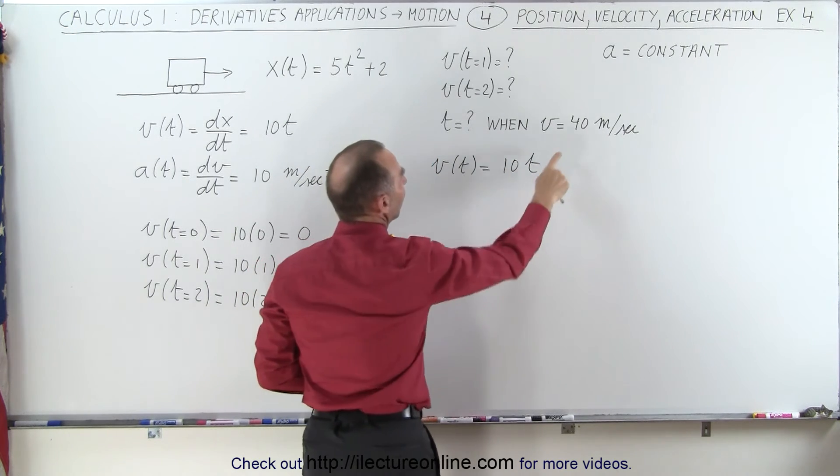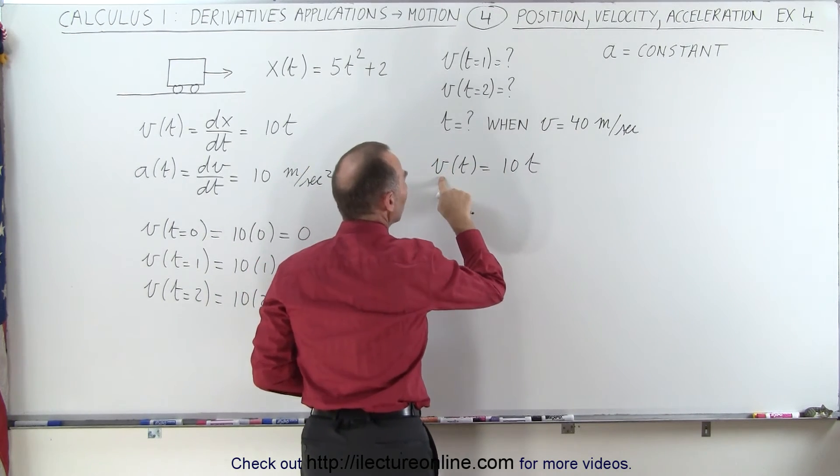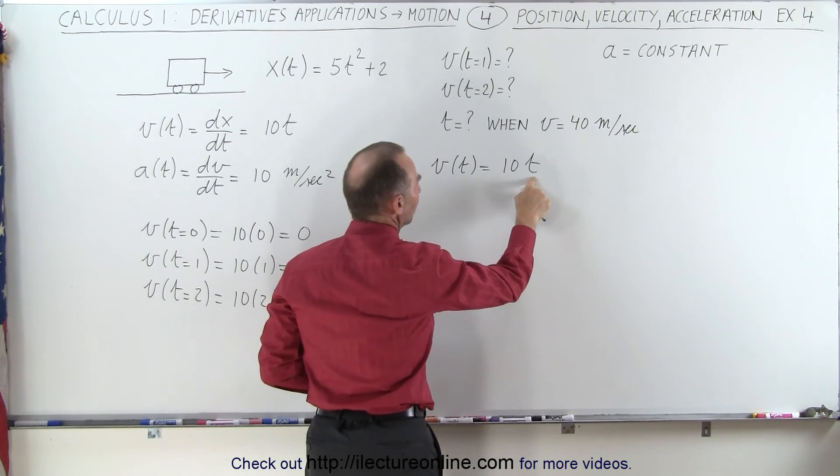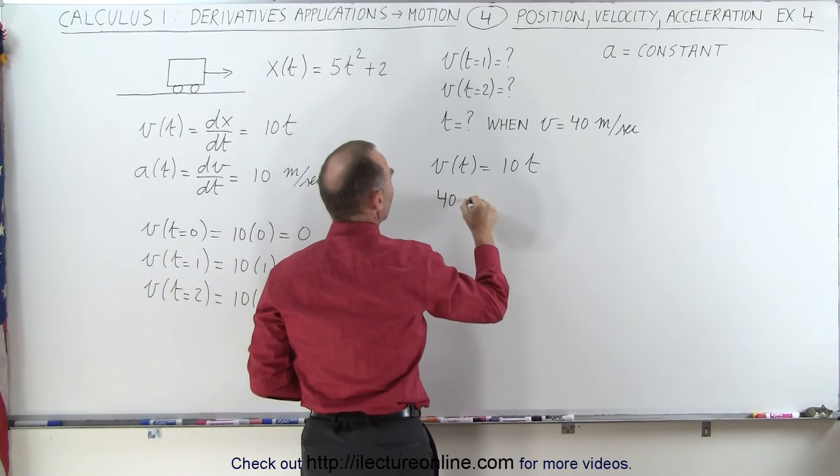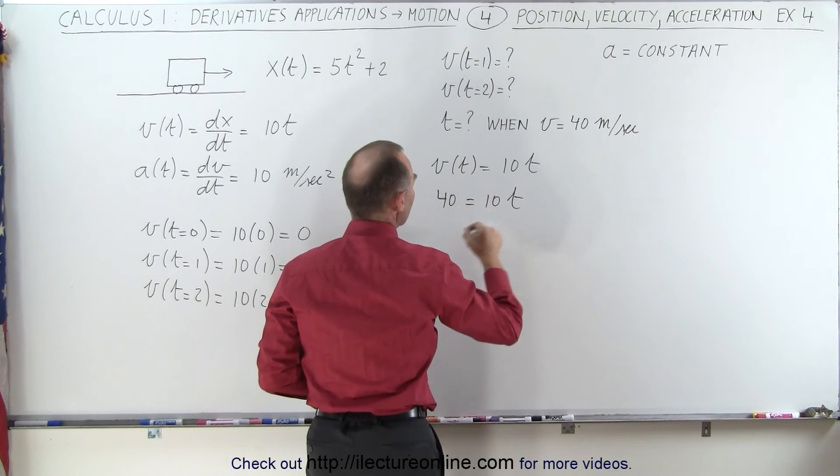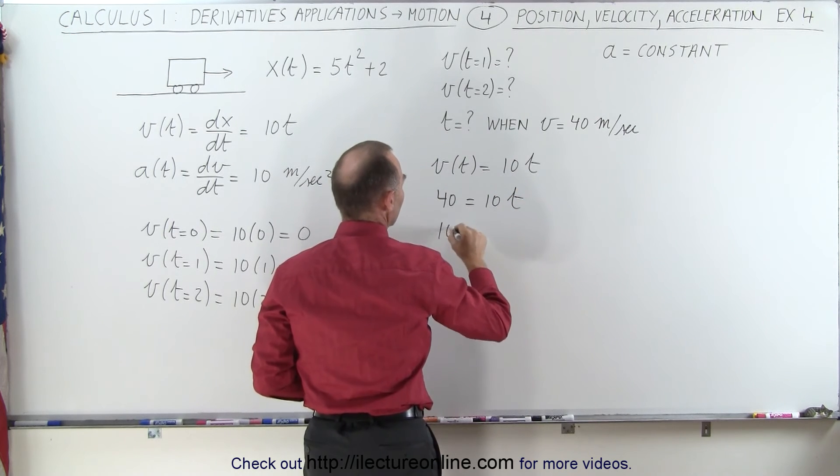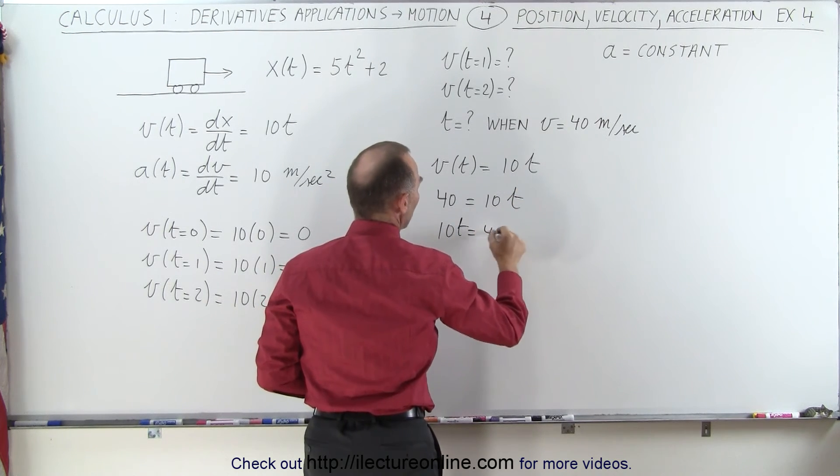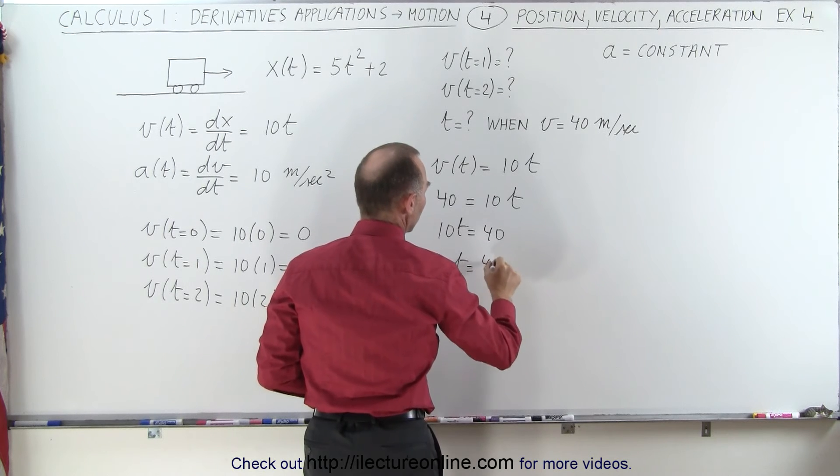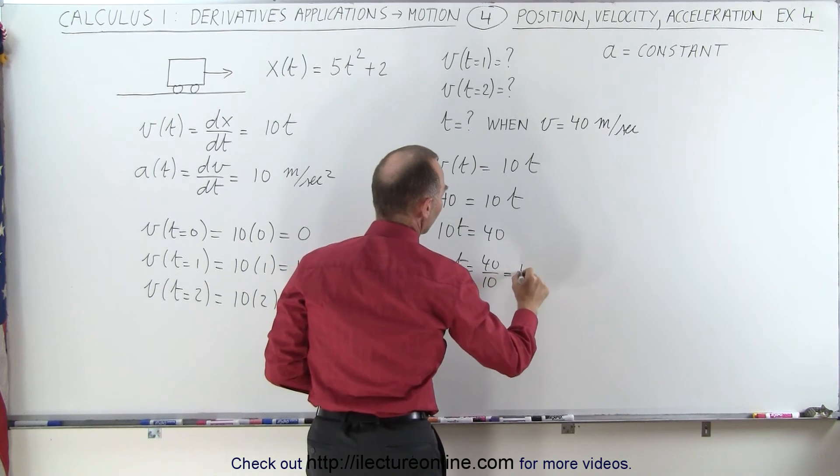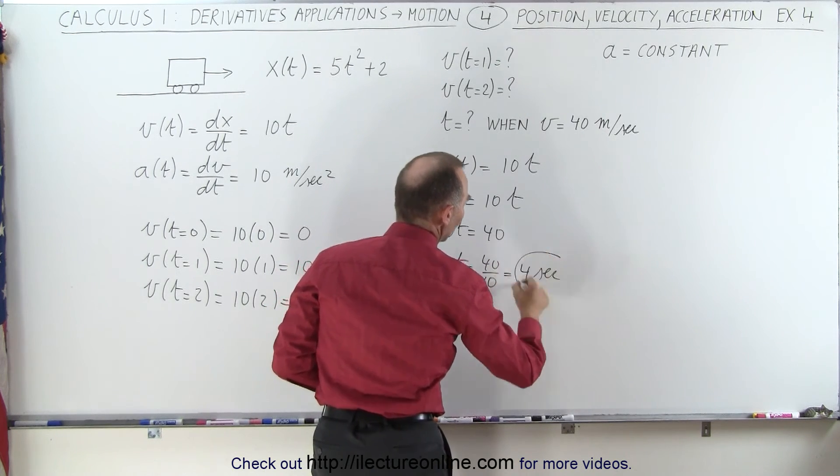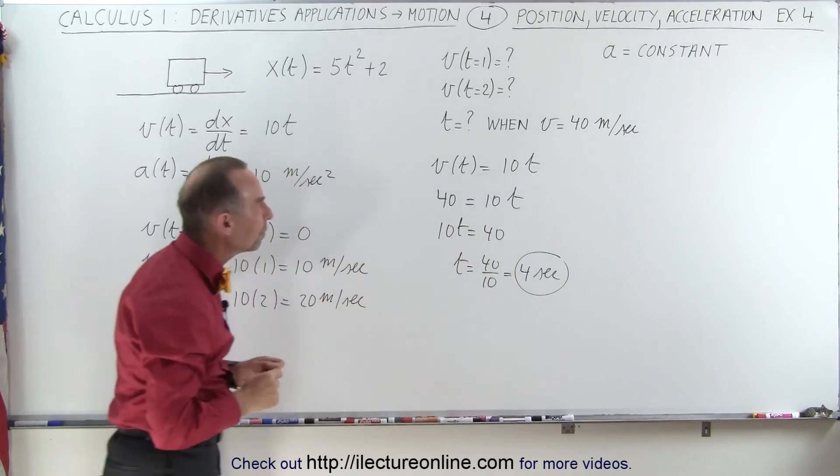And now we're going to set the velocity equal to 40 meters per second to solve for t. So 40 is equal to 10 times t. That means that 10t is equal to 40, or t is equal to 40 divided by 10, which is 4 seconds. So just as we predicted, the time would be 4 seconds.